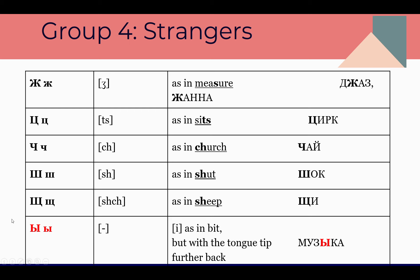And the last in this group is the vowel Ы. It's hard to write in transcription — even Russian teachers don't know how. It sounds like И but with the tongue further back: Ы. The Russian word: Музыка — music. Let's repeat the strangers: Ж, Ц, Ч, Ш, Щ, Ы.